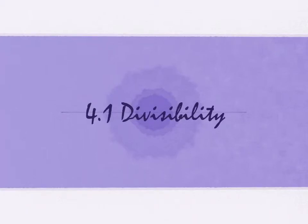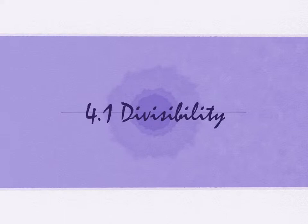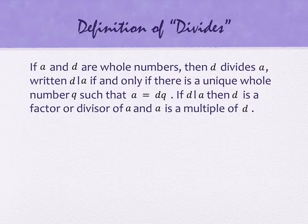Section 4.1 is called Divisibility. We're going to start with taking a look at what it means for something to actually divide, and then we're going to look at some divisibility properties and rules. Some of them you've probably seen before, some you may not have, but they help us determine whether something divides evenly without having to actually go through the division.